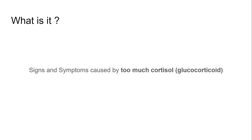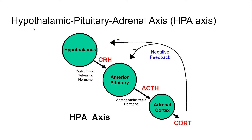Before we get into the details of Cushing syndrome, I would like to do a quick review on the hypothalamic, pituitary, and adrenal axis. The hypothalamus releases corticotropin-releasing hormone to stimulate the anterior pituitary to produce adrenocorticotropic hormone, ACTH, which stimulates the adrenal cortex, especially the zona glomerulosa, to produce cortisol. Cortisol is the main glucocorticoid in the body, and it has a negative feedback on the anterior pituitary and hypothalamus, decreasing the ACTH and CRH levels when cortisol level gets too high.